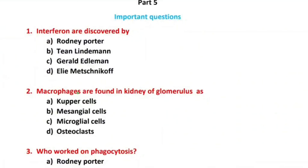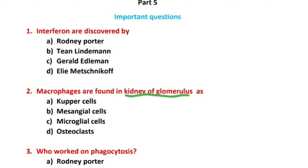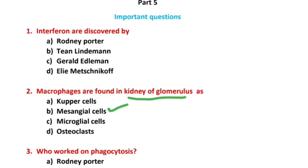Next, question number 2. Macrophages are found in the kidney of glomerulus. This is a kind of monocyte found in the kidney. Options include liver cells, neurocytes, and bones. The answer is B, mesangial cells — macrophages found in the kidney glomerulus.